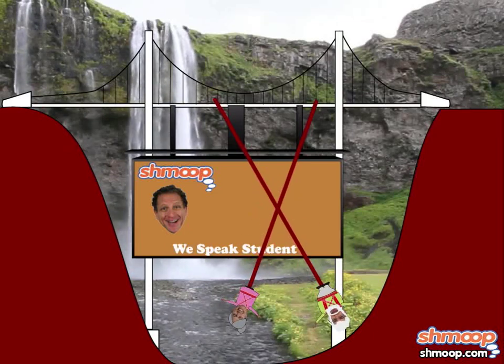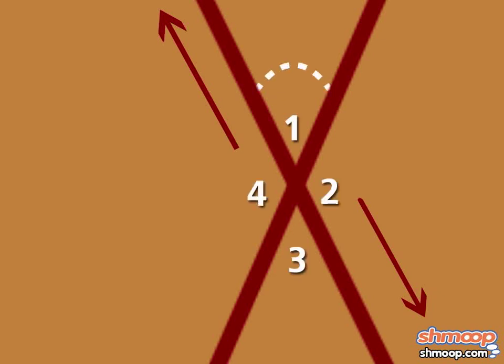If they both jump in opposite directions and don't hit each other, they'll make vertical angles. If the angle the bungee cords make at the very top is 52 degrees, what angle will they make at the bottom?